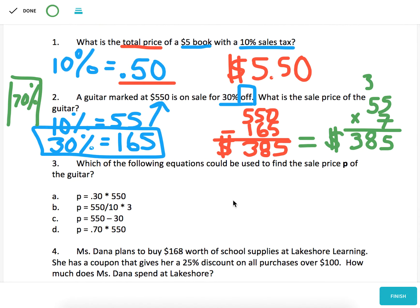Number three, which of the following equations could be used to find the sale price P of the guitar? Well, this speaks to what we just did in green. Choice A would be finding 30% of the guitar, .30 times 550. That's not the sale price. That's how much we subtract. Choice B says divide by 10, that gets you 10%, multiply by 3, that also gets you 30%. And choice C has just taken away $30, which is not 30%. But choice D says multiply 550 by .70, which would get you 70% of the original price. And that is a way to find the sale price of the guitar.